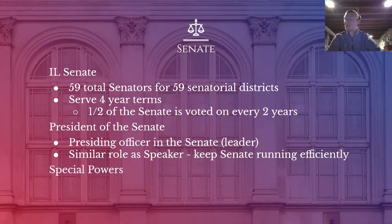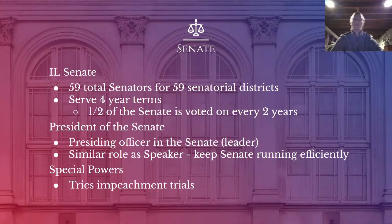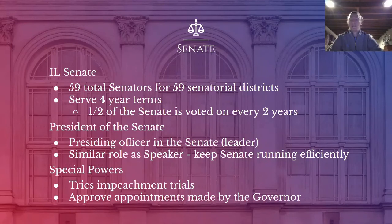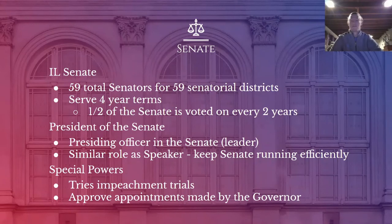There are a couple more special powers for the Senate. First, they try the impeachment trials — so after the process gets started in the House, it moves to the Senate, which decides whether there is an impeachable offense. They will also approve appointments made by the governor, similar to how the U.S. Senate approves presidential appointments. However, in the case of the Illinois Senate, they will not be approving appointments for judicial positions because those are voted on by the people — but we'll get to that when we cover the judicial branch.